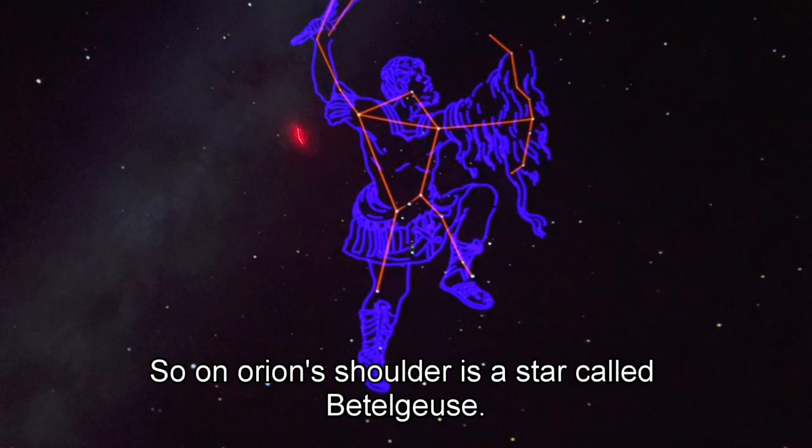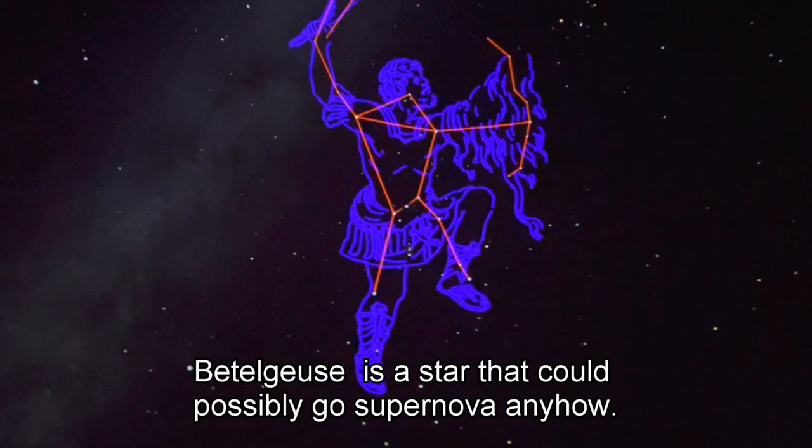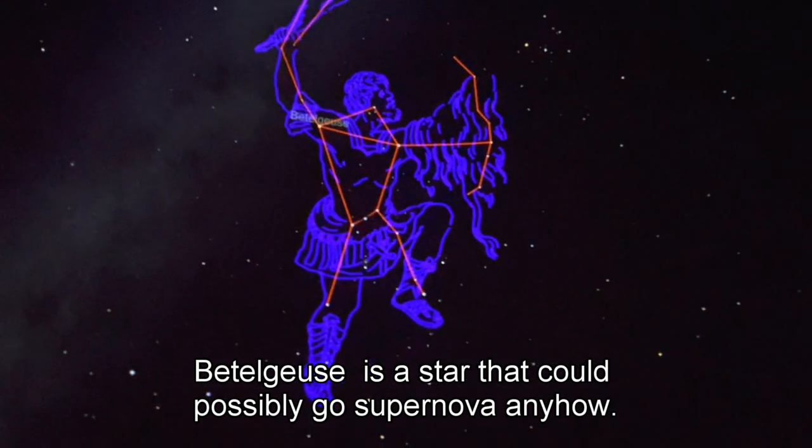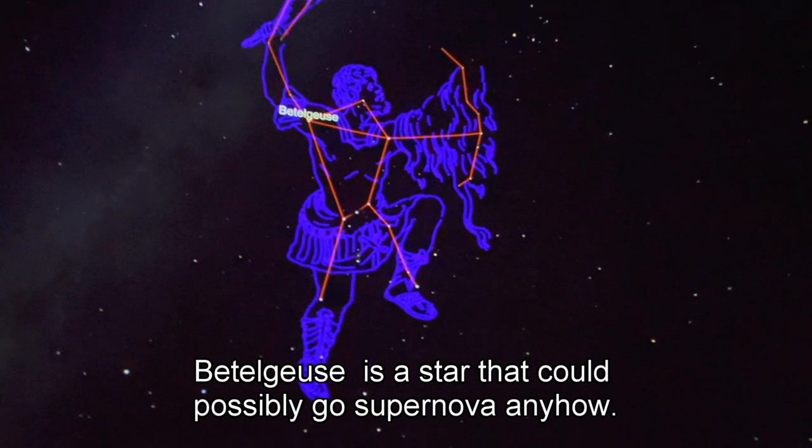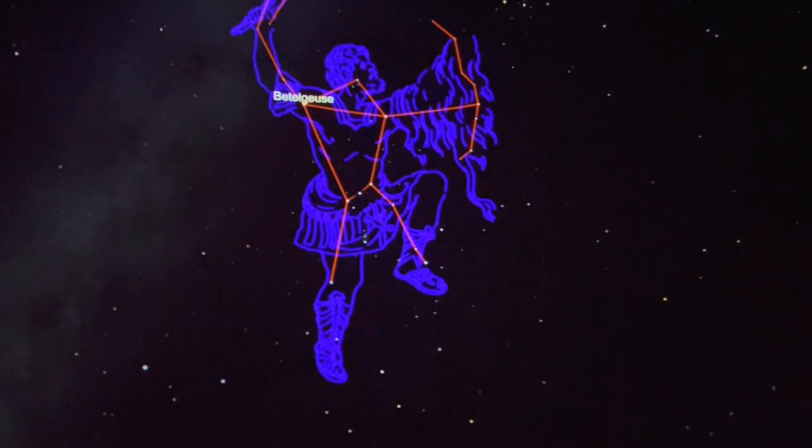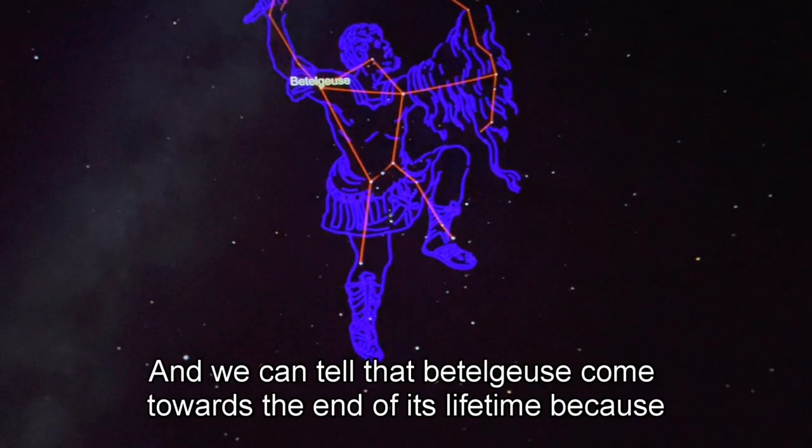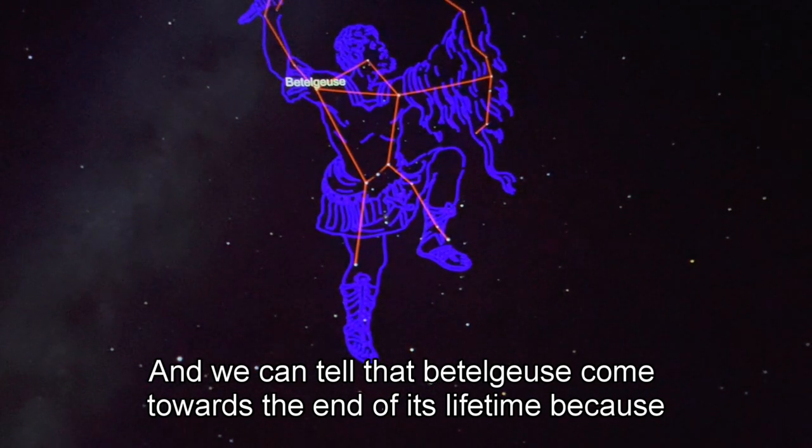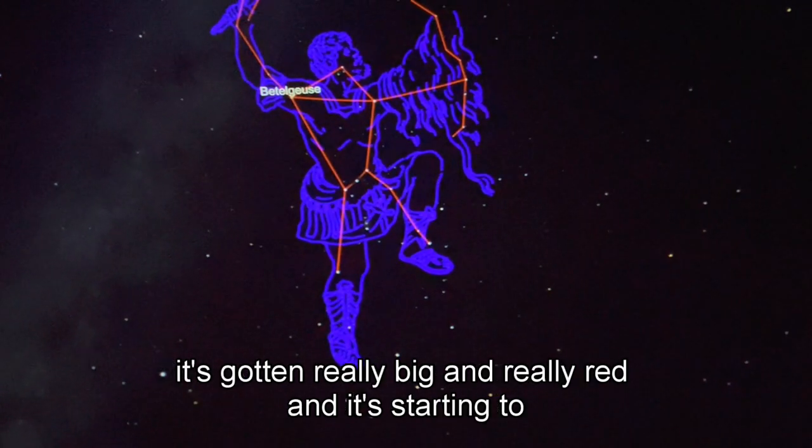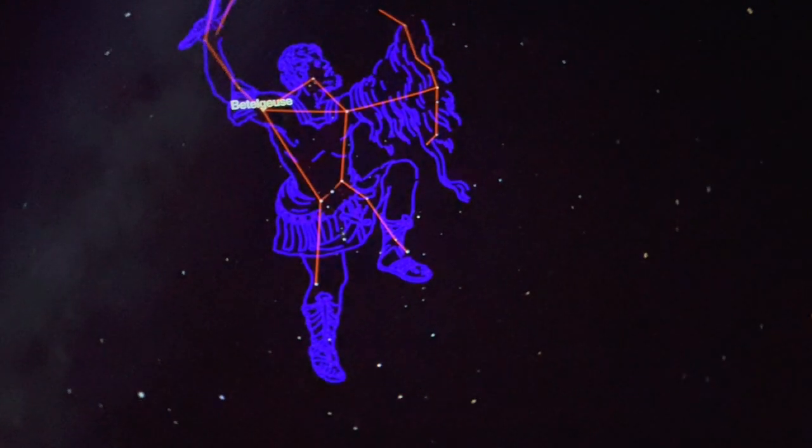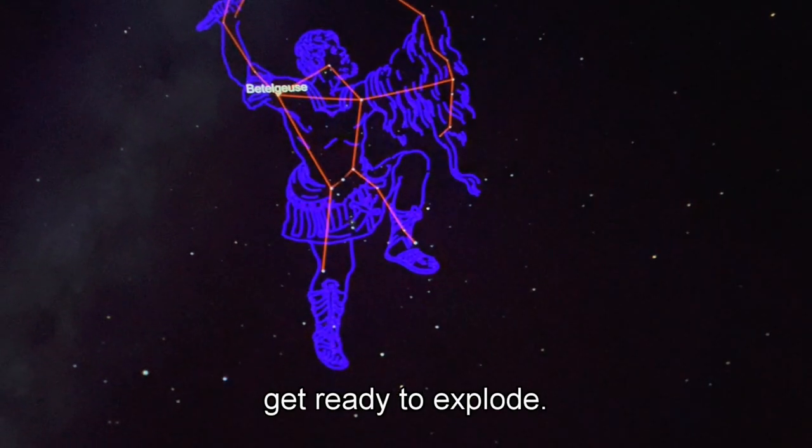On Orion's shoulder is a star called Betelgeuse. Betelgeuse is a star that could possibly go supernova any day now. Supernovas occur at the end of a really energetic star's lifetime. We can tell that Betelgeuse has come towards the end of its lifetime because it's gotten really big and really red and it's starting to get ready to explode.